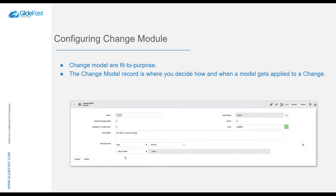On the change model record you can customize record presets, which determines which fields get auto-populated with which data. When you set these they get set to read-only, so be careful what you put in here and make sure it's not something you want the user to modify later. There is a simple script you can disable that handles the read-only piece. You can also configure whether the model is available in 'Create New' — that's the interceptor showing the list of change models — and you can set it as a default change model.